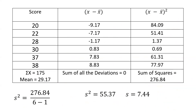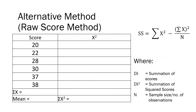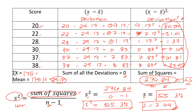Now alternatively, we also have the raw score method. In the raw score method, there's no need to compute for the deviation. Instead, we can simply square each score, and there is a shortcut formula to get the SS. In this formula, the summation of x squared is the summation of squared scores, n is the sample size, and we can get the SS using this formula without computing deviations.